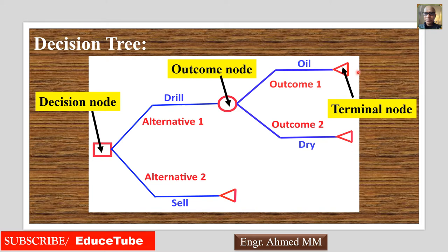At the terminal node we get payoffs — the expected monetary value — and it is the result of decision alternatives and the outcomes combined.